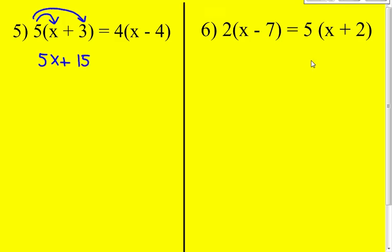If you do that one step, bring down everything else. Actually, we could just do distributive property on this side as well. That's 4 times x and then 4 times negative 4. So 4 times x is 4x and then positive 4 times negative 4 is negative 16.